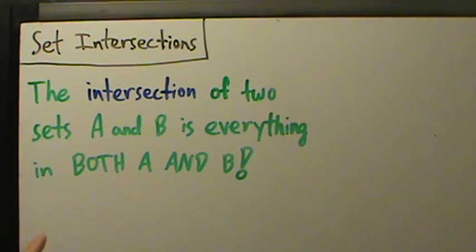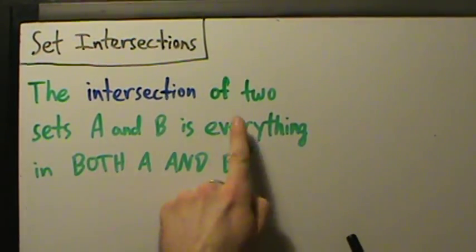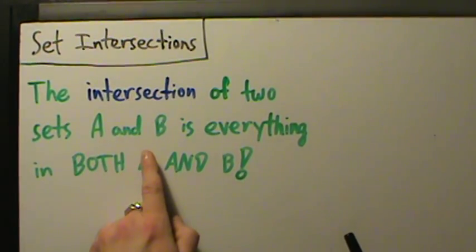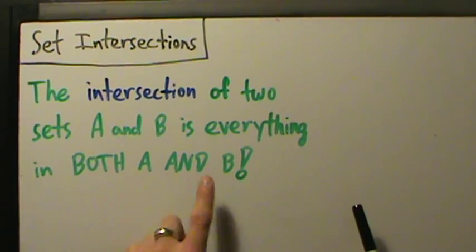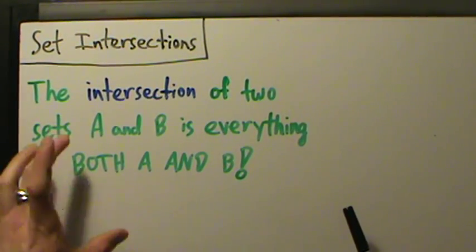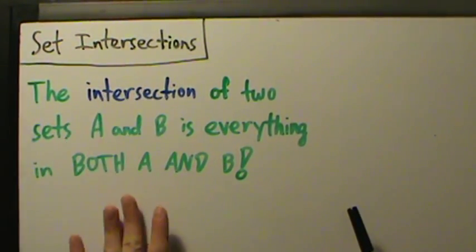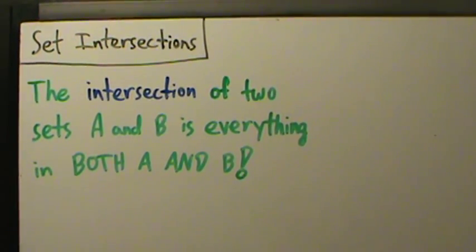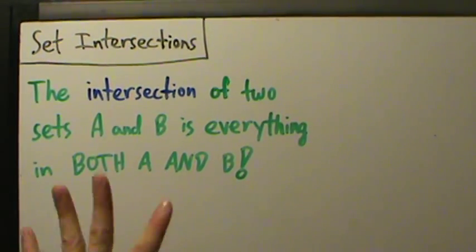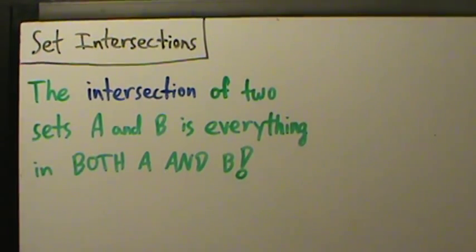Let's talk about intersections of sets. The intersection of two sets A and B is everything in both A and B. I want to emphasize the difference between intersection and unions. We talked about unions in the previous video — the union of two sets is everything in A or B or both. But the intersection of two sets A and B is everything that's in both of them. It has to be in both sets to be in the intersection.